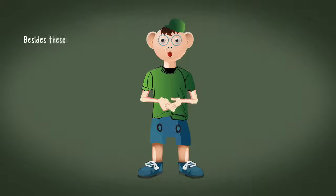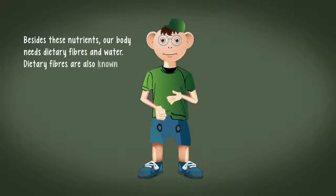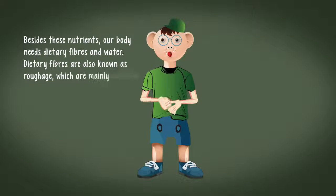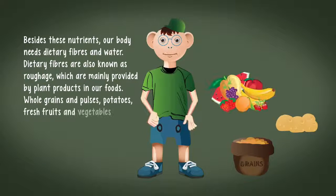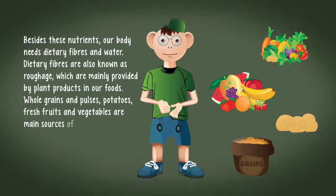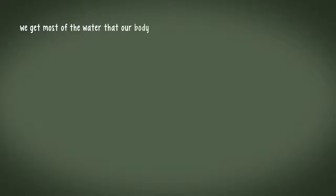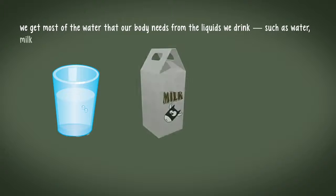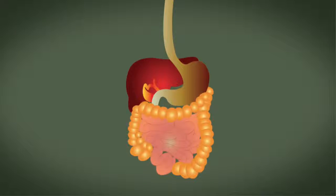Besides these nutrients, our body needs dietary fibers and water. Dietary fibers, also known as roughage, are mainly provided by plant products in our food. Whole grains, pulses, potatoes, fresh fruits and vegetables are main sources of roughage. We get most of the water from liquids we drink, such as water, milk and tea. Water helps our body absorb nutrients from food and helps in throwing out waste from the body as urine and sweat.